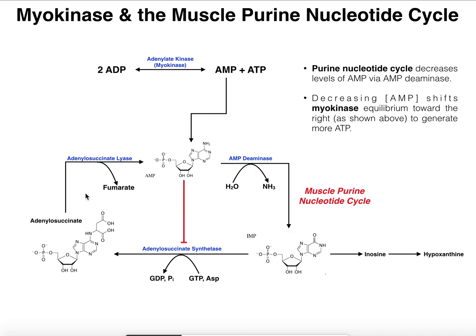The whole point of the purine nucleotide cycle is to decrease the levels of adenosine monophosphate. We don't want AMP levels to just build up indefinitely during exercise, because if that were the case we'd have more and more AMP, and that's not a good thing. This cycle occurs in other cells as well — they express these enzymes — but it's most prominent in muscles because during exercise they are extraordinarily metabolically active.